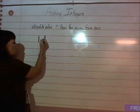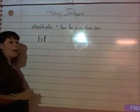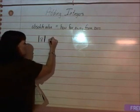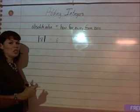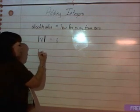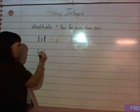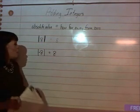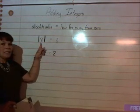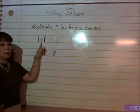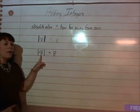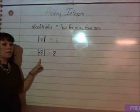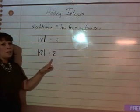And then you put the number on the inside. So, the absolute value of eight would be eight. Just like the absolute value of negative eight is also eight. Because eight is eight places away from zero, negative eight is also eight places from zero. So, the absolute value for both of those, positive or negative, would be eight.